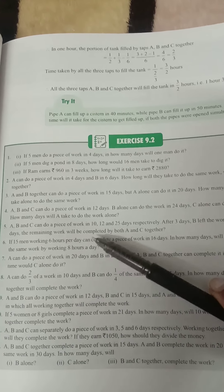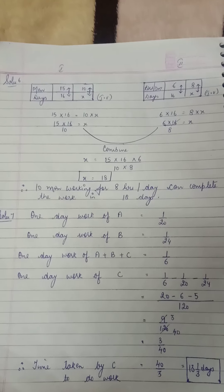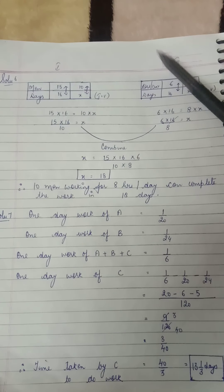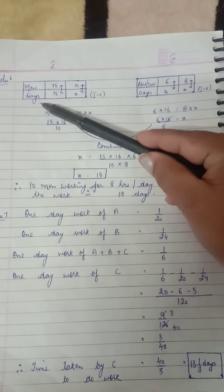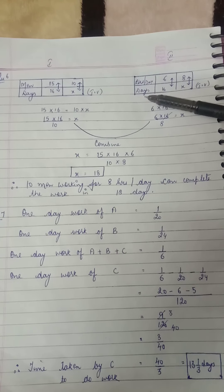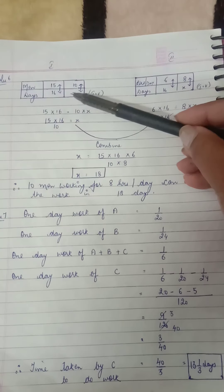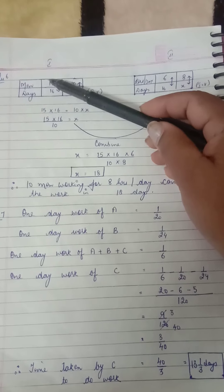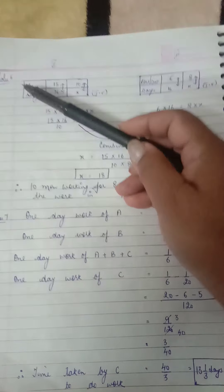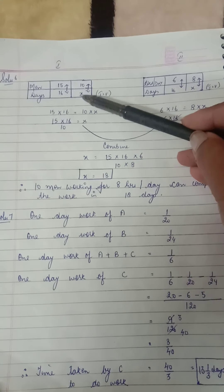A similar question is already done in exercise 1. We'll split the question in two parts. In part 1 we'll take men and days, and in part 2 we'll be taking hours a day with days. We're taking days here because days are missing, so first we'll combine it with number of men. Men: 15 men take 16 days, 10 men take x days.